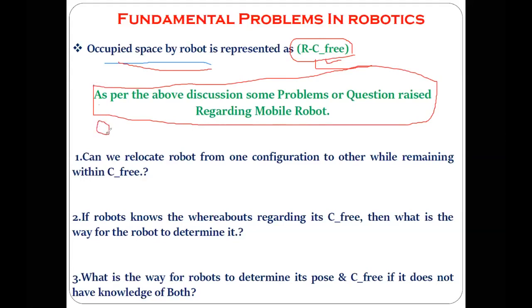When the robot is present at a certain point and doing some activity, we call that robot a point robot.